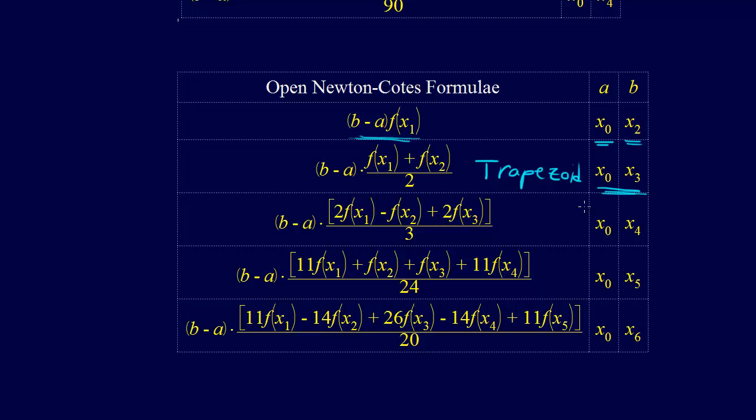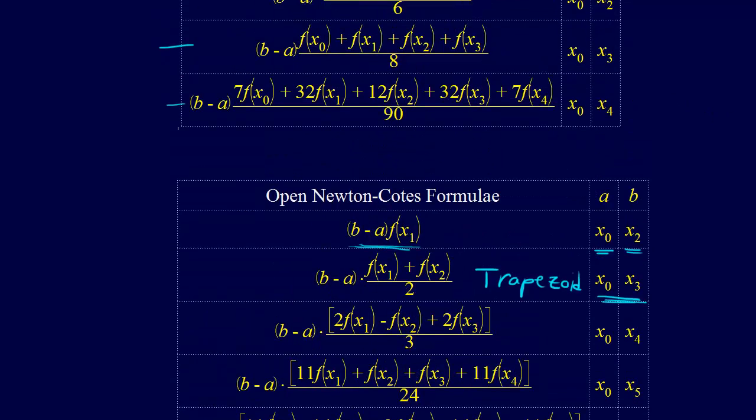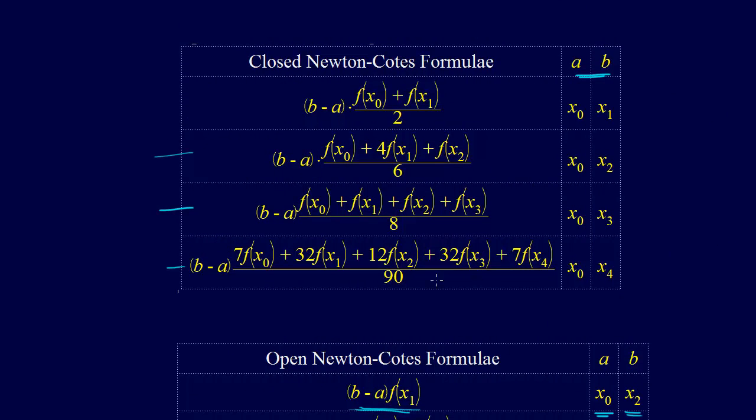For the purposes of numerical integration, we really don't use the open methods too much. We do though use the closed Newton-Cotes formula. And so I think that wraps up this section on the Newton-Cotes formula for the closed forms and the derivations. So that's it.